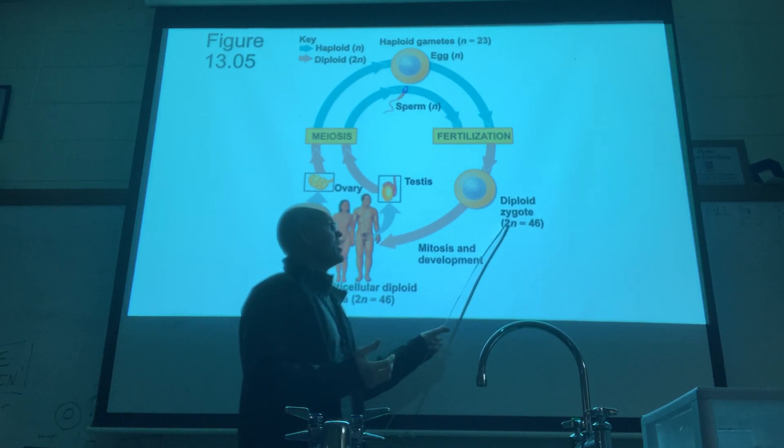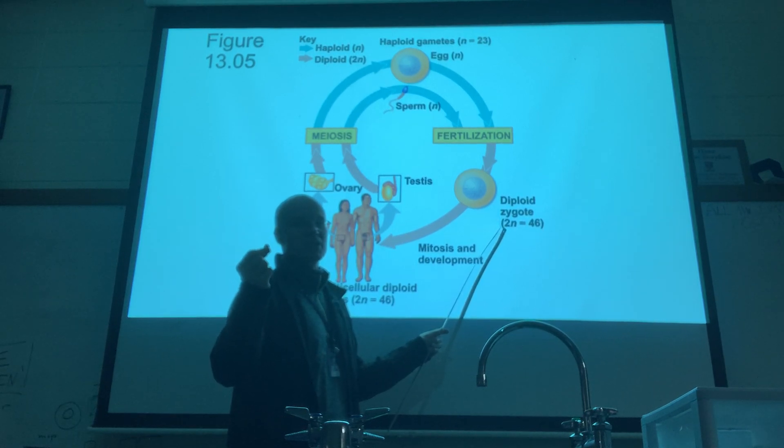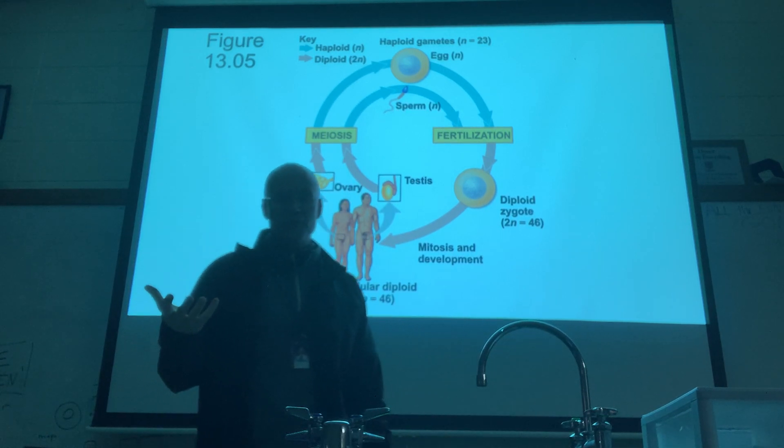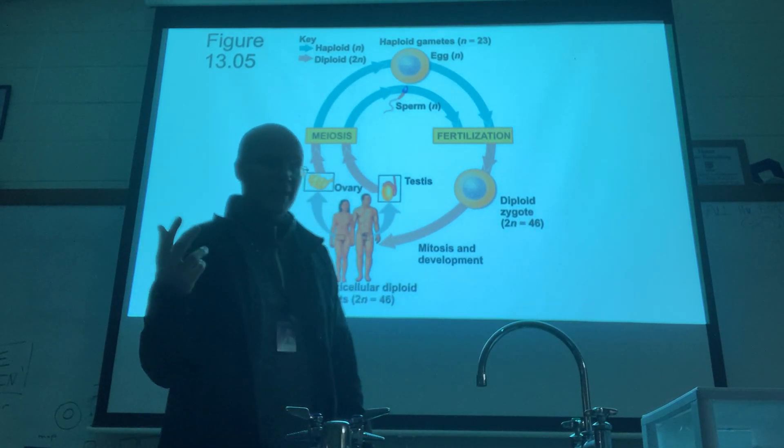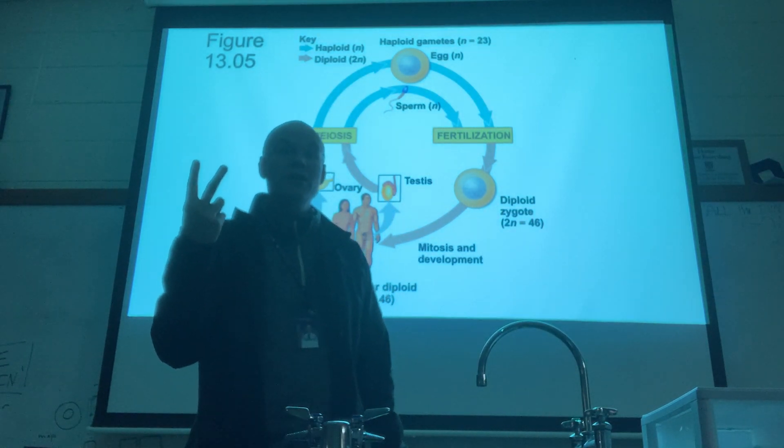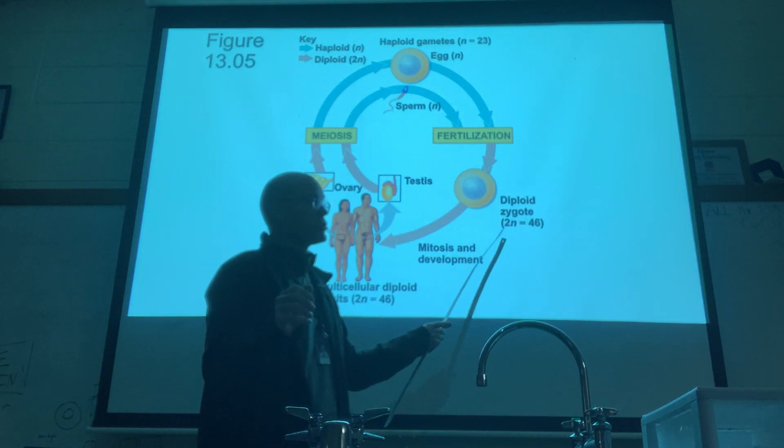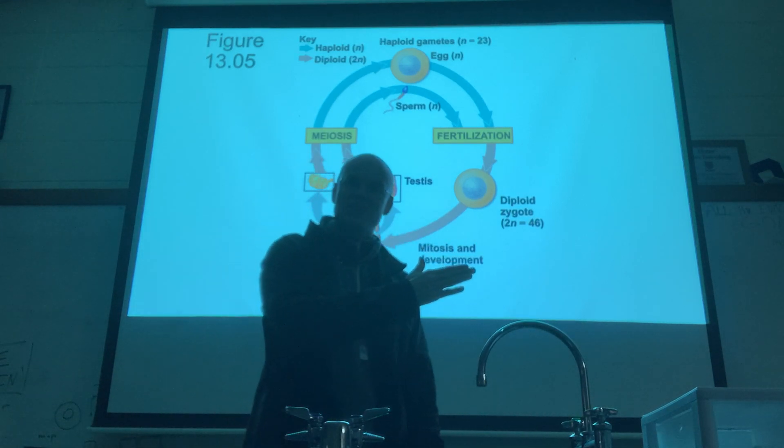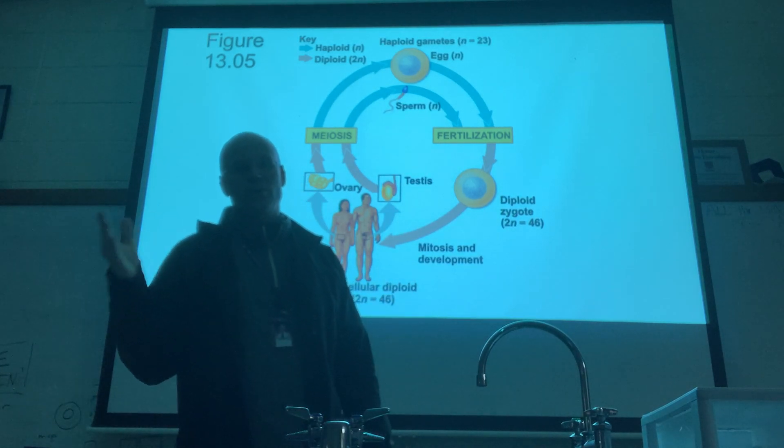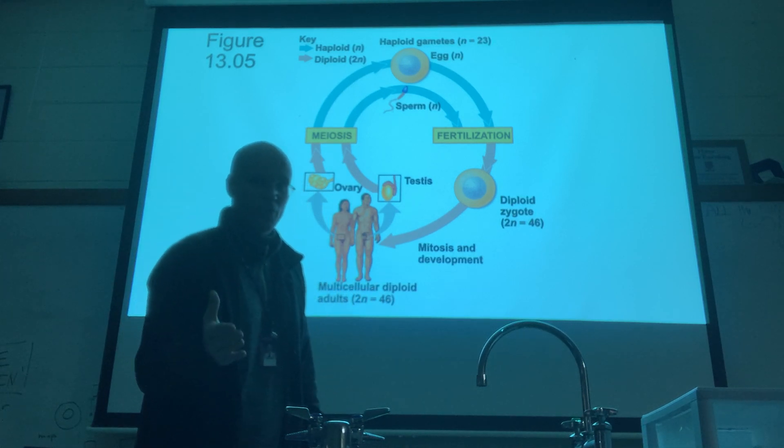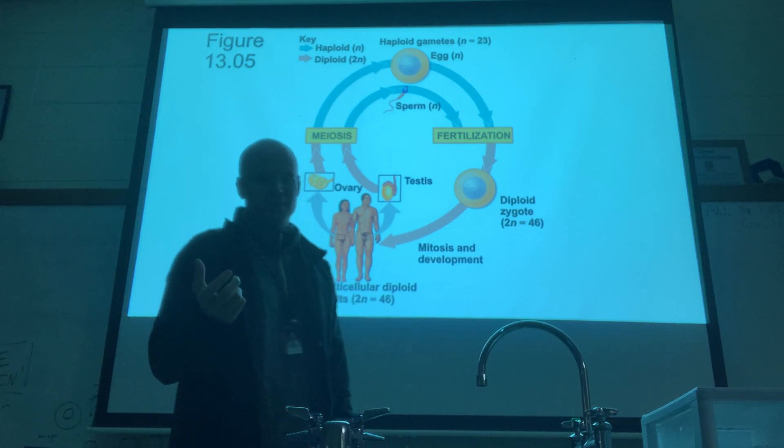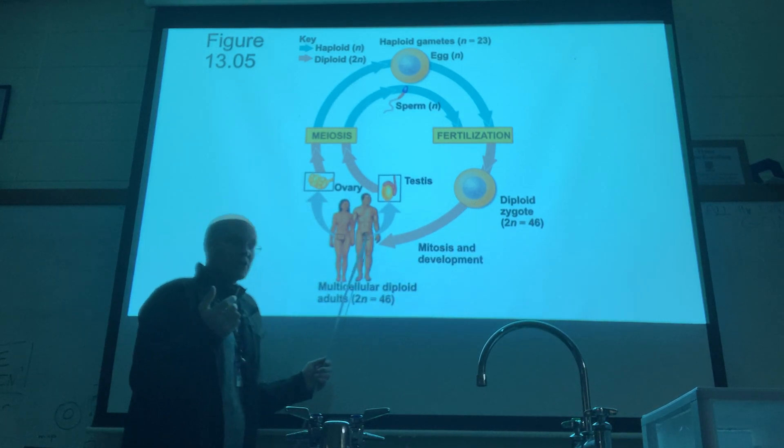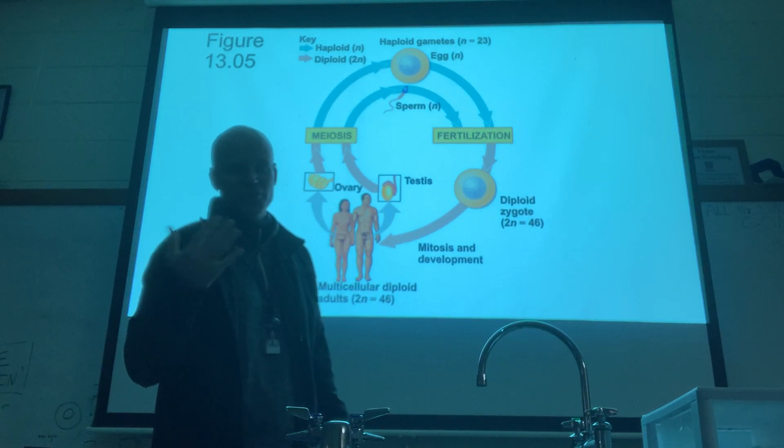That is a number of chromosomes you have because you are a human. The 2n here is a symbolic way of representing a term that we call diploid. Most of your cells are diploid cells. Your zygote is a diploid cell. Diploid means two sets of chromosomes. You actually have two sets of chromosomes: one set of 23 came from your mother, one set of 23 came from your father. 23 plus 23 is 46. And so you now are a multicellular diploid young adult that has 46 chromosomes in every cell.